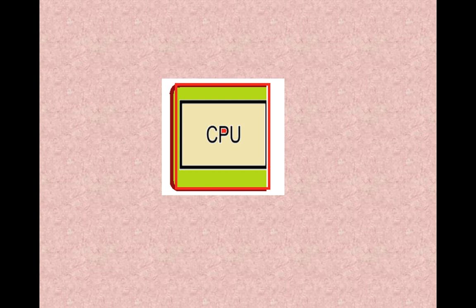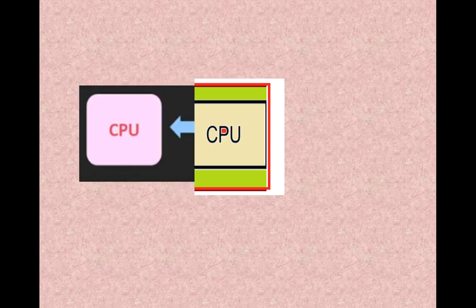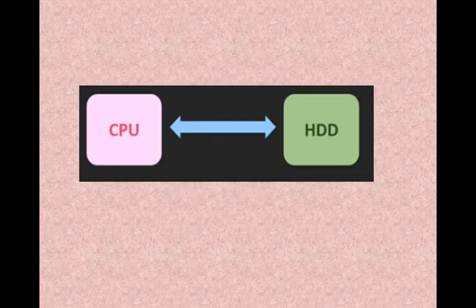Whatever work we do, the CPU takes that work, and the CPU needs instructions and data to do that work. Normally, where does the CPU get these instructions and data from? First, you must have heard about the hard disk.